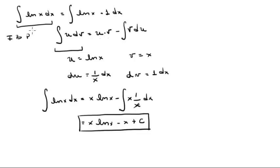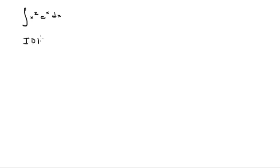And that is the second one done by integration by parts. Now hopefully you're starting to get the hang of it. Let's do another example. Let's say you have the integral of x squared times e to the x dx. We can do this by integration by parts — whenever you have two functions, it can be done this way.